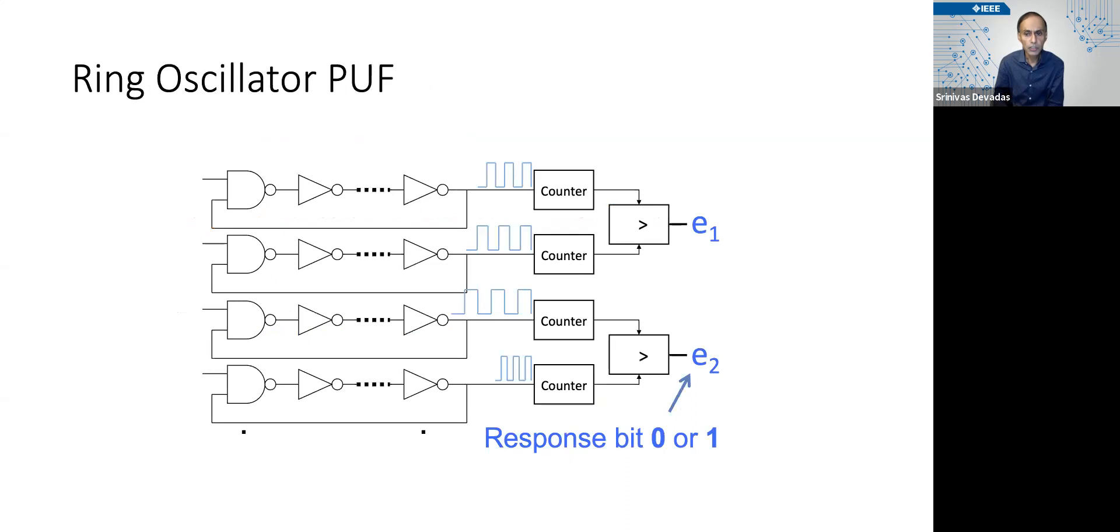Perhaps the simplest realization of a physical unclonable function is a pair of ring oscillators or an array of ring oscillators where adjacent pairs are compared to each other.